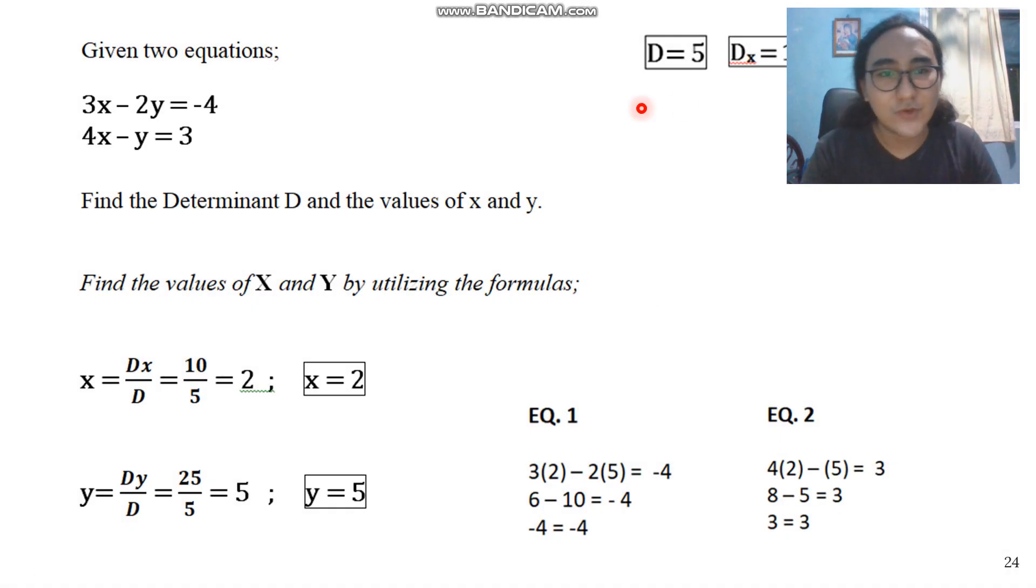Now that we have 3 values here, we can now finally look for the values of x and y. The unknown variables of our linear equations. So, x is equals to d sub x over d. Our d sub x is 10. Our d is 5. So, 10 over 5 is 2. x is equals to 2.